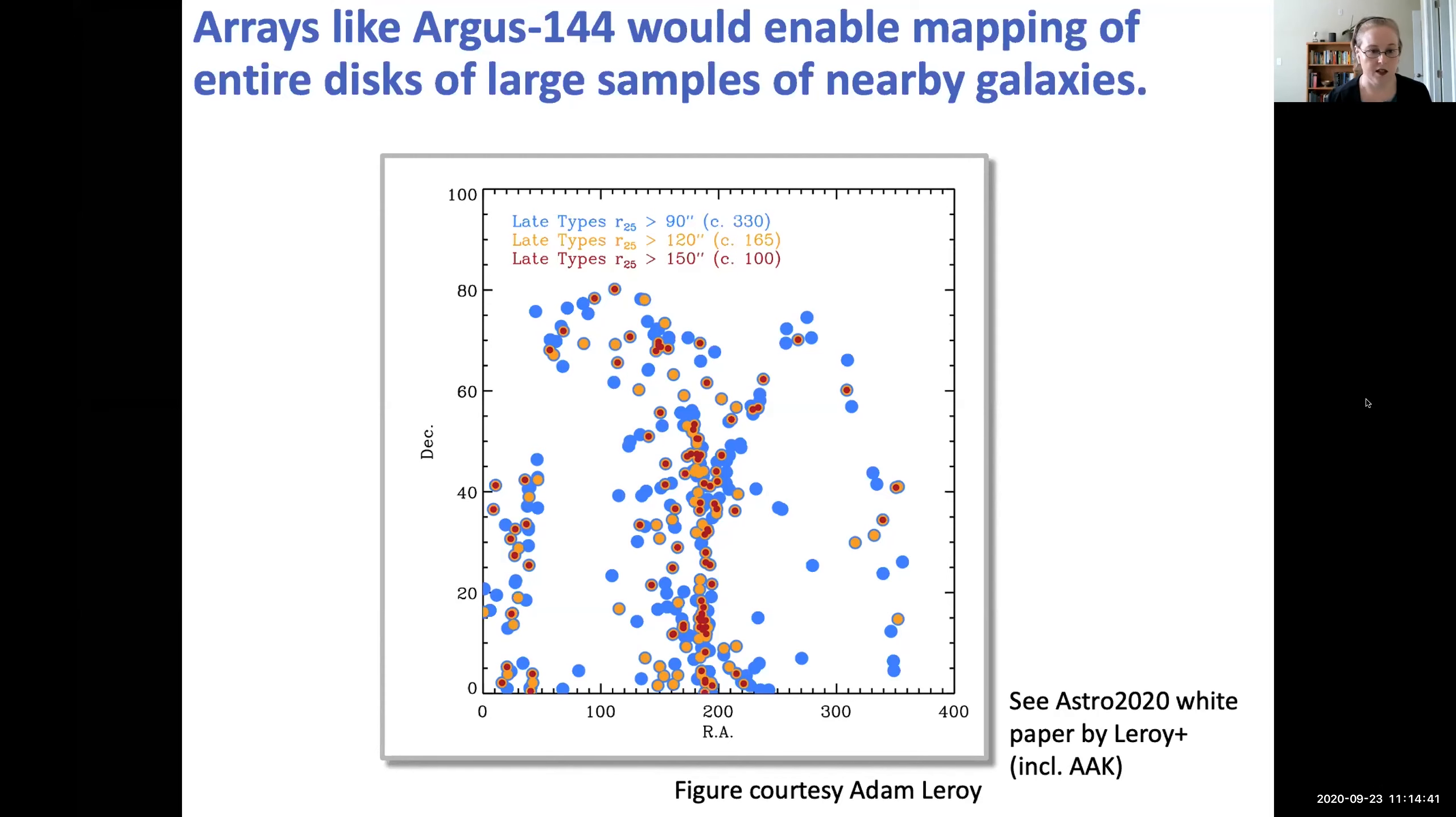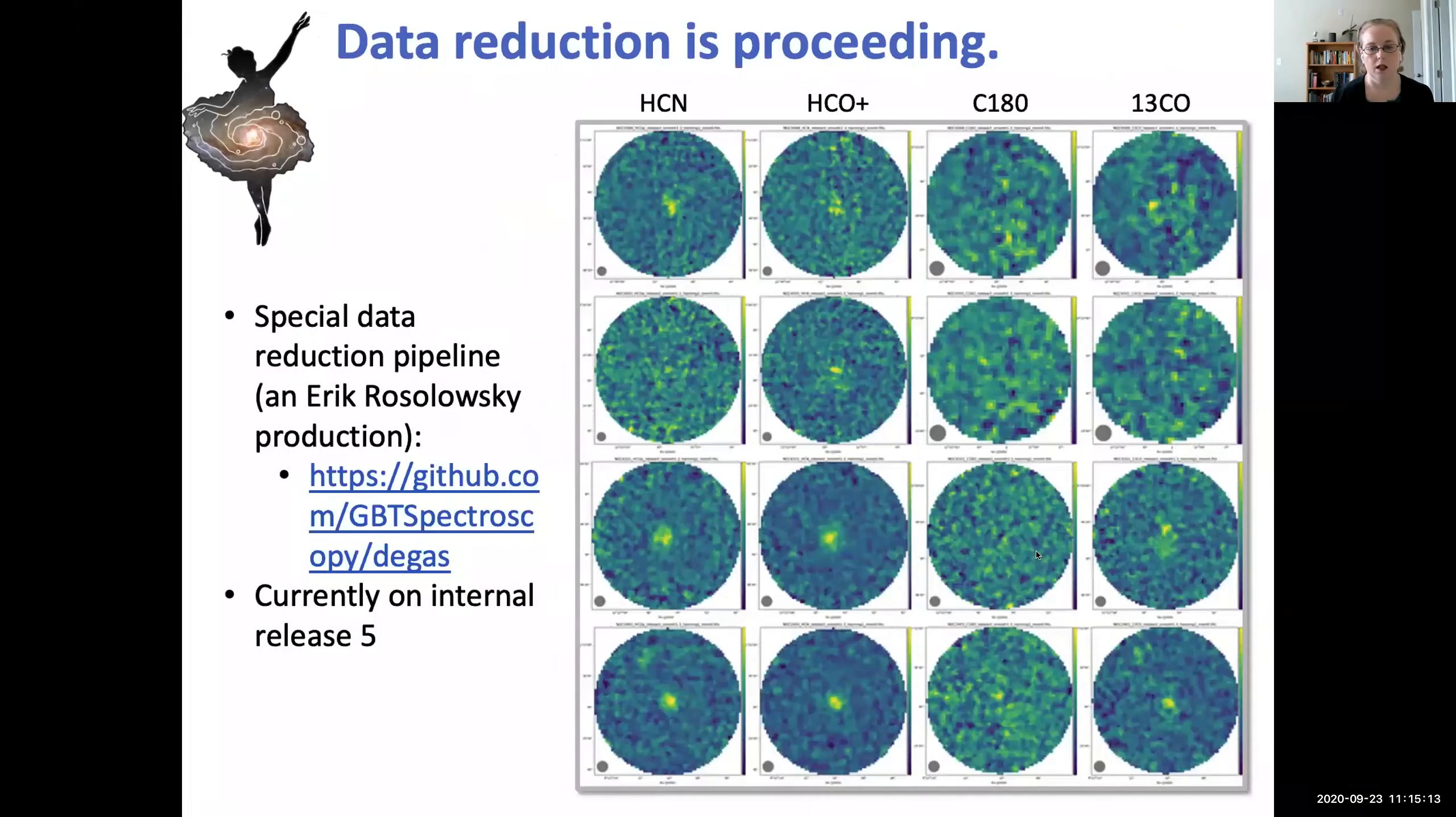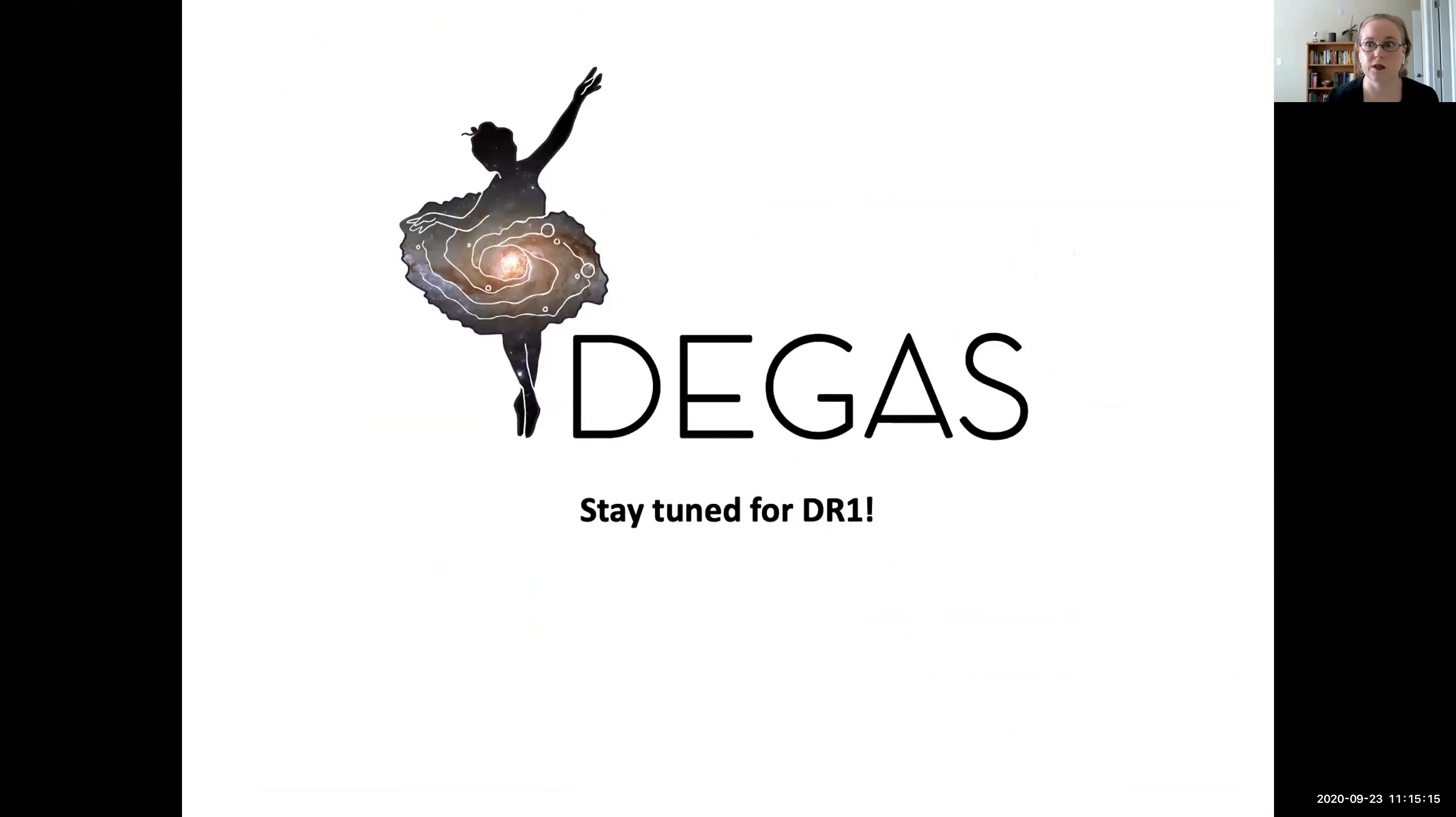Just another slide stolen from Adam. We have here the sensitivities of about 0.1 millikelvin per 25 kilometers per second, just taking a CO two to one intensity and multiplying it by a couple of factors. And obviously you can still play the same stacking game that we play with DEGAS to enable deeper detections. So I will end here. Actually, I want to end on my beautiful logo. And I will take questions.